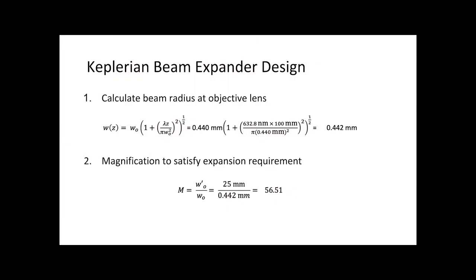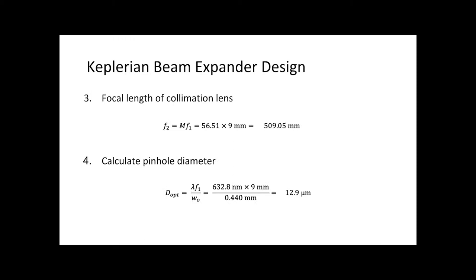In the pre-lab, we designed a beam expander which takes a laser with a 0.4mm waist and expands it to fill the 40mm clear aperture of the collimation lens. The beam expander we designed in this lab consists of a 9mm focal length objective lens, 12.9 micron spatial filter, and a 2 inch diameter, 500mm focal length collimating lens with a convex side toward the collimated space to reduce spherical aberration.